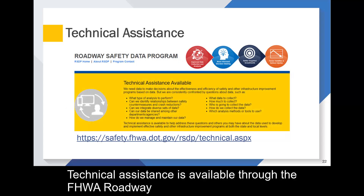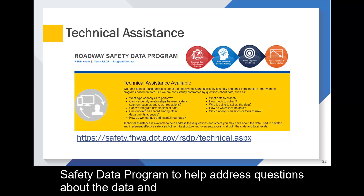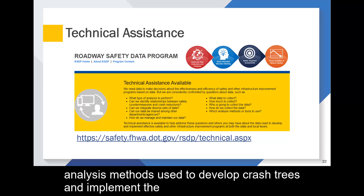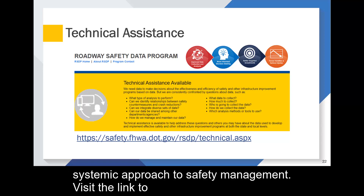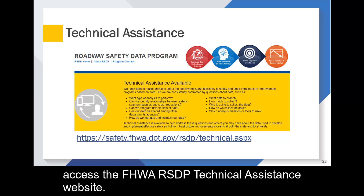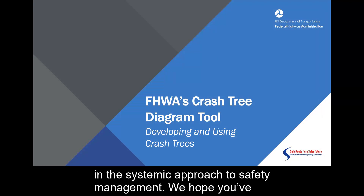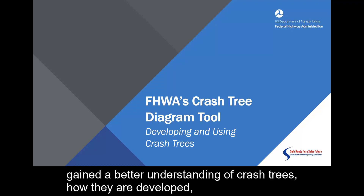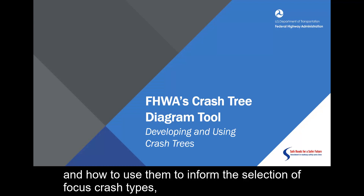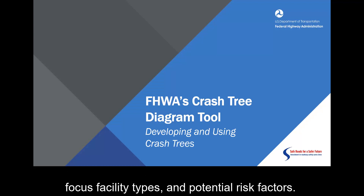Technical assistance is available through the FHWA Roadway Safety Data Program to help address questions about the data and analysis methods used to develop crash trees and implement the systemic approach to safety management. Visit the link to access the FHWA RSDP technical assistance website. Thank you for your interest in the crash tree diagram tool. We hope you've gained a better understanding of crash trees, how they are developed, and how to use them to inform the selection of focus crash types, focus facility types, and potential risk factors.